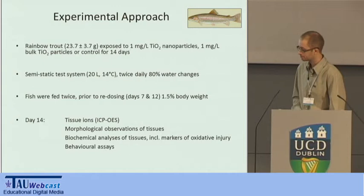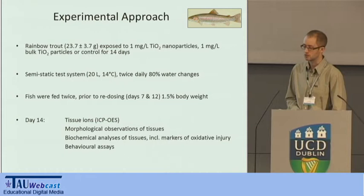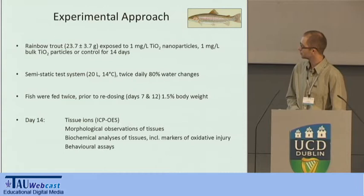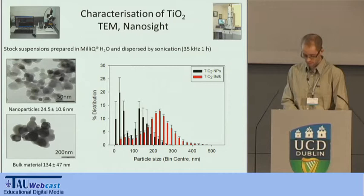At day 14 of the exposure, we took tissues to look at the distribution of titanium and performed morphological observations of the tissues. We also included biomarkers such as markers of oxidative injury — there's in vitro data to suggest that titanium dioxide generates free radicals and reactive oxygen species. We also performed various behavioral assays. The nanoparticles and bulk material are of different sizes, as expected, and the aggregate size distribution differs within our stock suspensions.